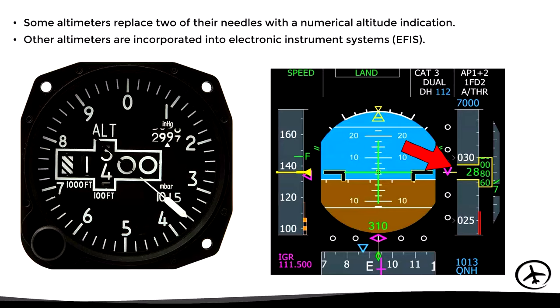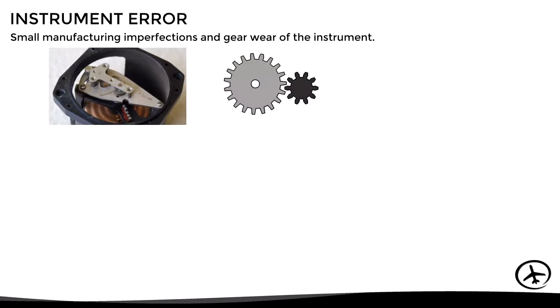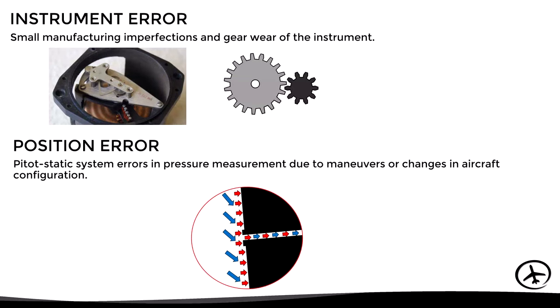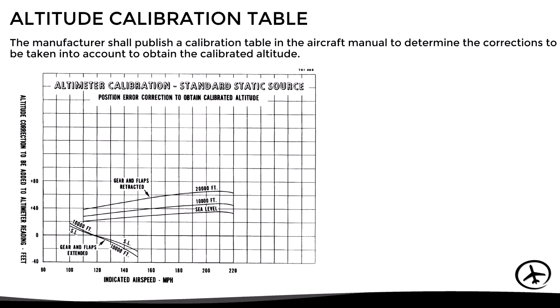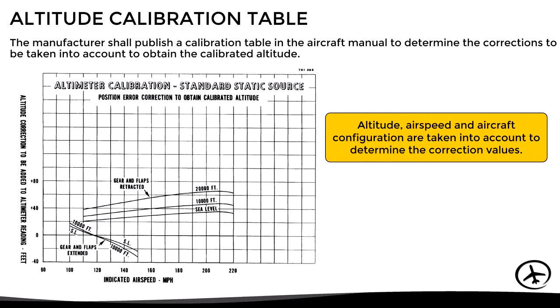Altimeters are not perfect. They present instrument errors related to wear of the gears and mechanical imperfections, as well as position errors caused by pressure measurement errors of the pitot-static system due to maneuvers or changes in aircraft configuration. This is why the manufacturer publishes an altitude calibration table allowing the pilot to apply corresponding altitude corrections to obtain the calibrated altitude. The table accounts for altitude, airspeed, and aircraft configuration, though normally corrections do not exceed 50 feet.